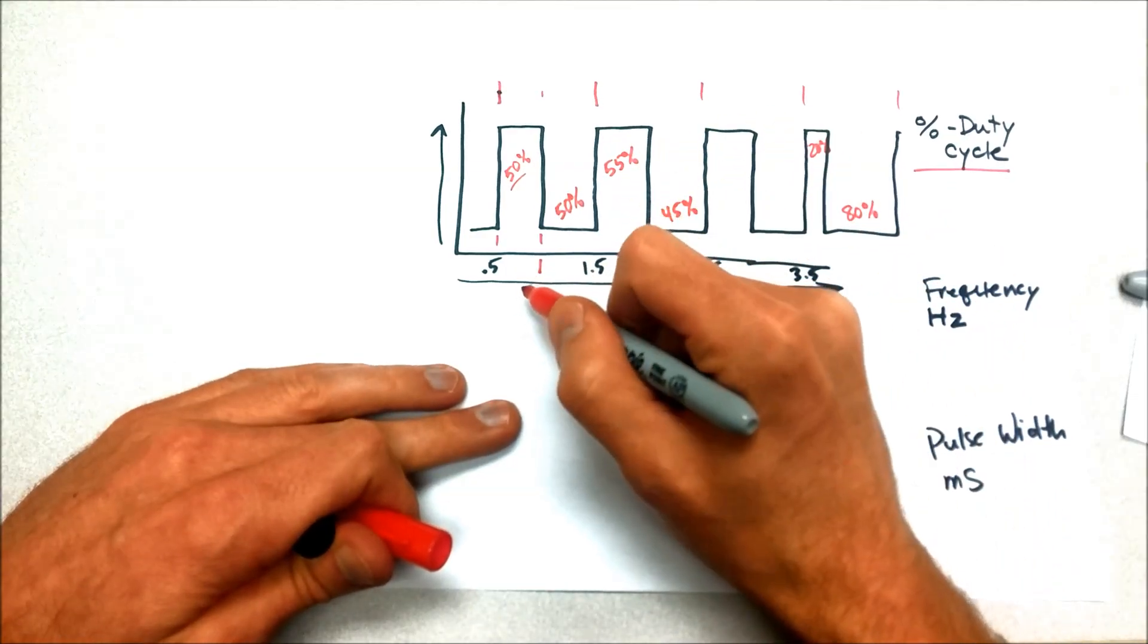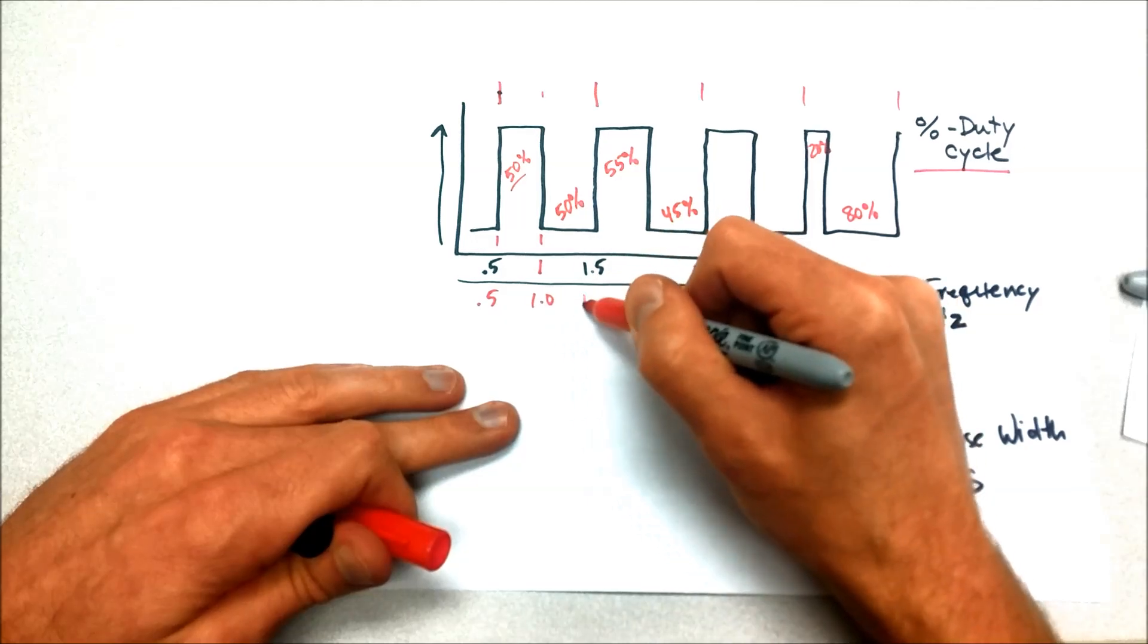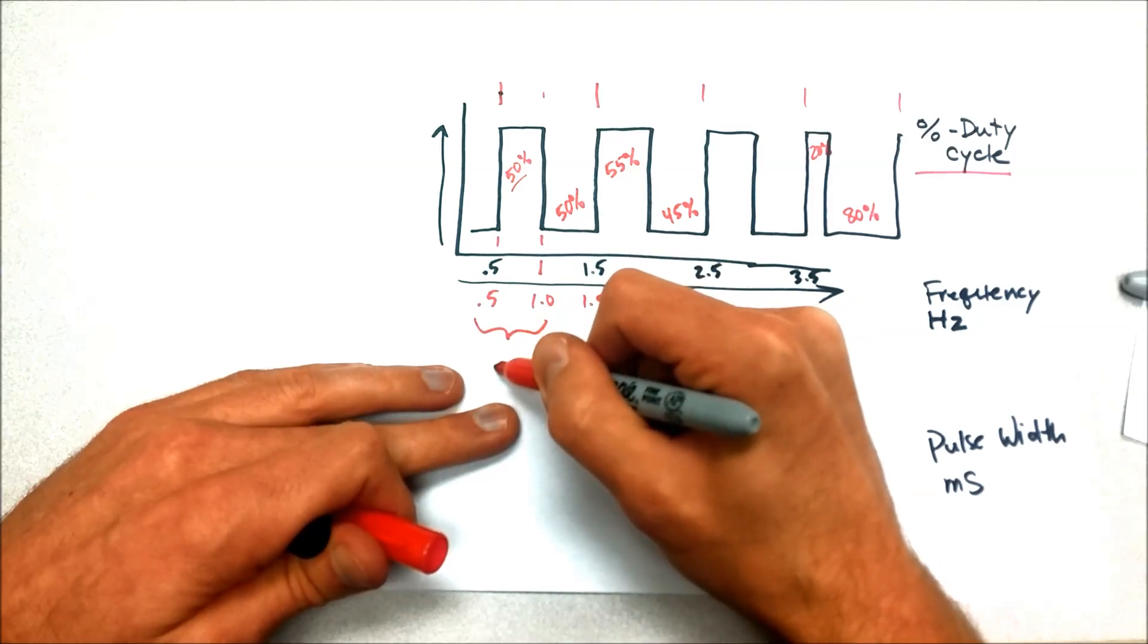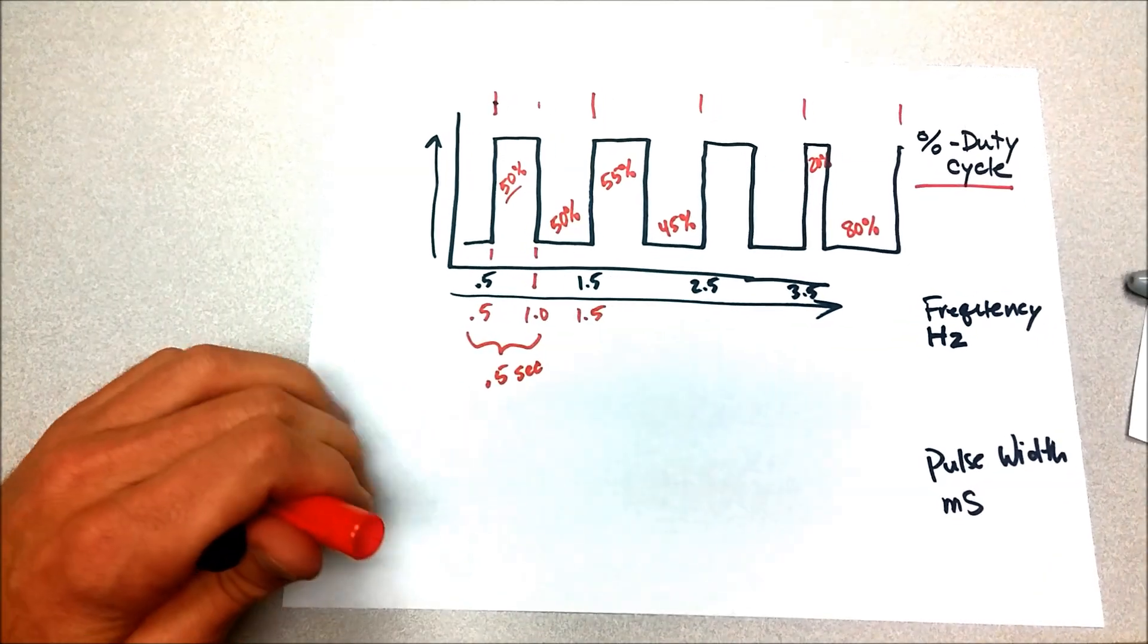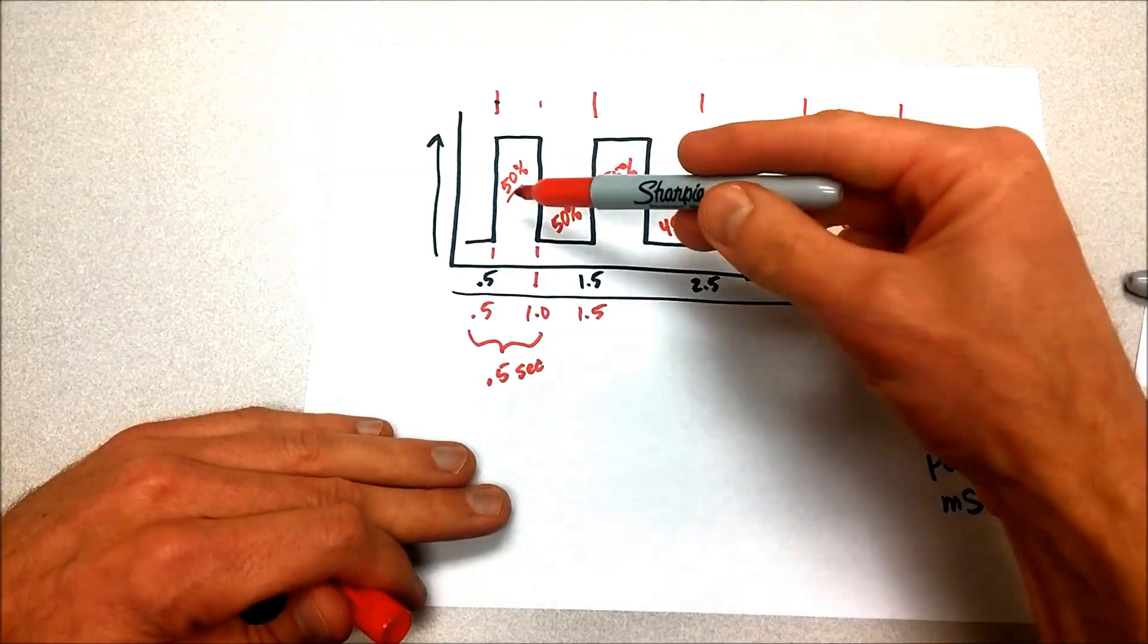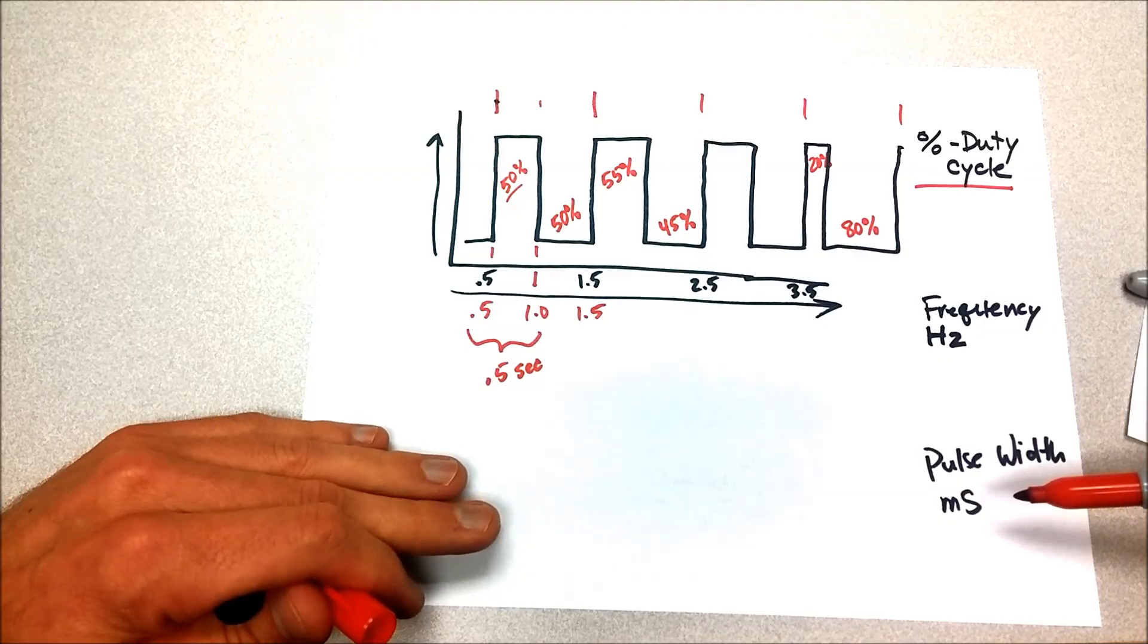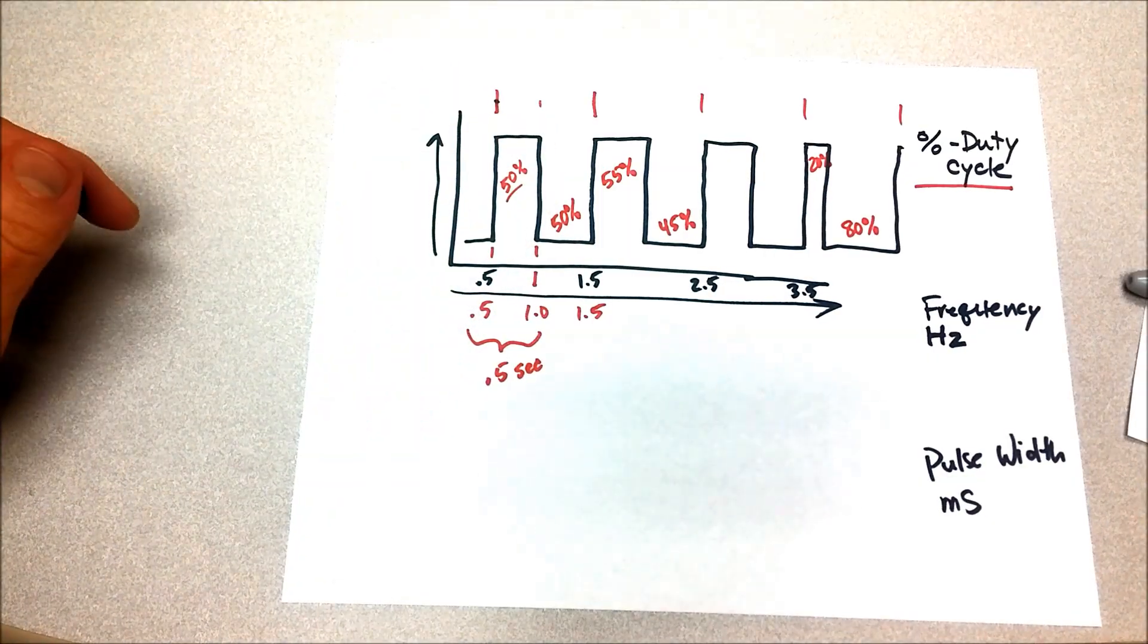If it's 50%, this would be 1.0 right here, right? So we have 0.5, 1.0, 1.5. The difference between here and here is going to be 0.5 seconds. That's the pulse width. Of course, we're usually dealing in much smaller increments of time than that, and so we're talking about a fraction of a second, so we'll usually measure that in milliseconds. But that's the way that we measure the time that the pulse was on for.